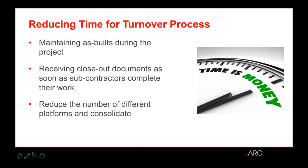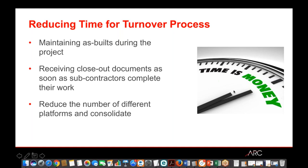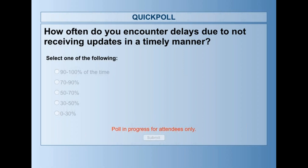A poll was conducted asking attendees: 'How often do you encounter delays due to not receiving updates in a timely manner?' The results showed that most attendees clicked the 50 to 70% of the time range, with about 80 to 90% of respondents falling in that middle range — confirming that delays from untimely document updates are a near-universal challenge for project teams.